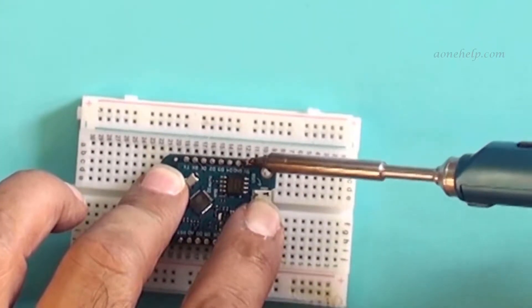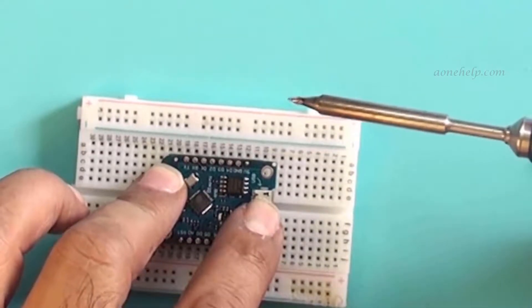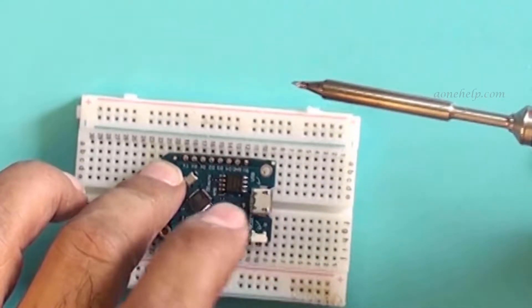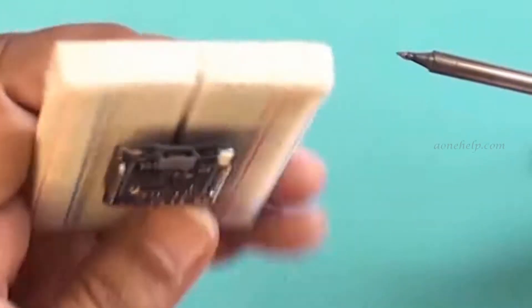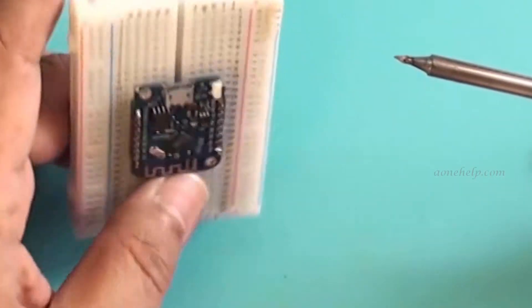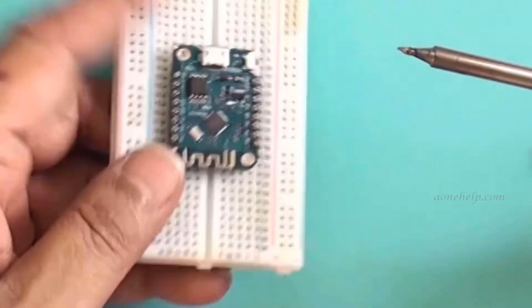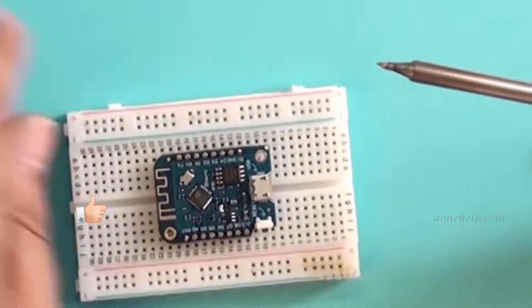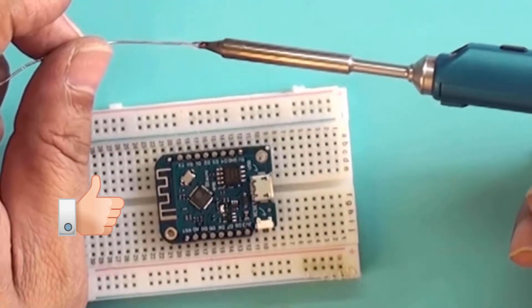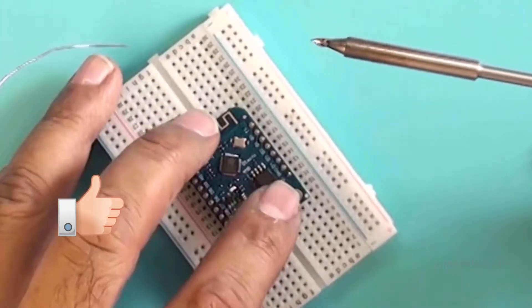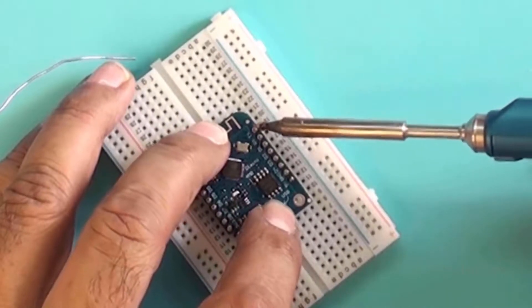Now the solder is flowing properly and is not sticking with the soldering tip. Soldering of this pin is over. Before proceeding further, let's ensure that the headers are at right angles with the module. In case they are not at right angles, we should melt the solder and reset the angle. Since here the headers are at right angle with the module, we can proceed with soldering of the rest two corner pins using the same procedure.